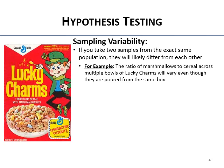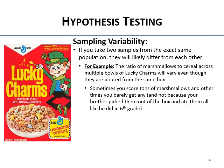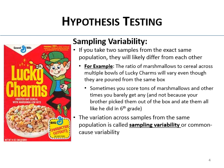Sometimes you get a ton of marshmallows and only a little bit of that nasty brown stuff, and sometimes just a couple marshmallows. My brother actually picked out all the marshmallows one time and I got an entire bowl of nothing but the brown stuff. The variation you get across samples — even though the population has some fixed percentage of marshmallows — is called sampling variability. It's a real thing.